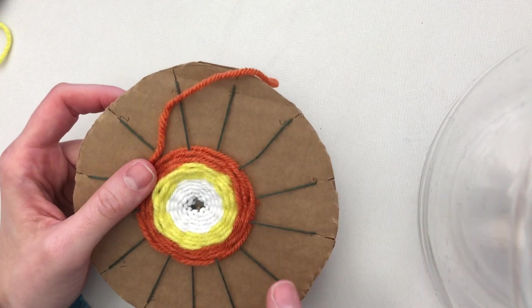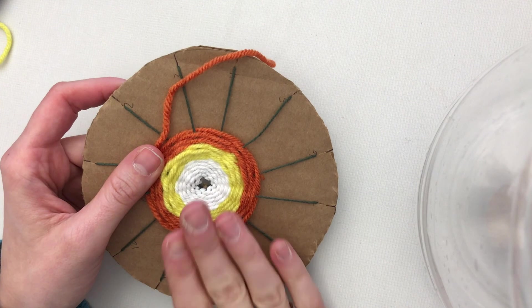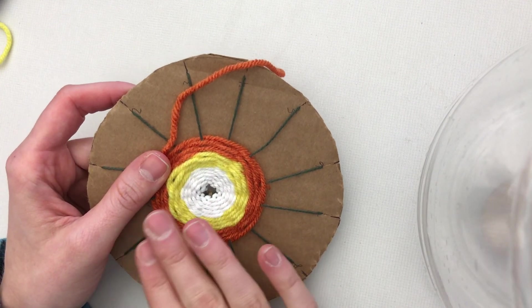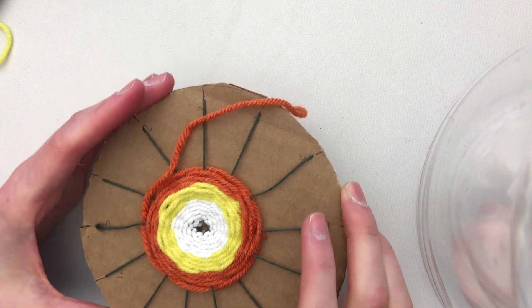And then cut out your felt into the shape that you want it to be, whether it's an animal or a mountain scene or something else entirely that you designed. That would be your final piece.